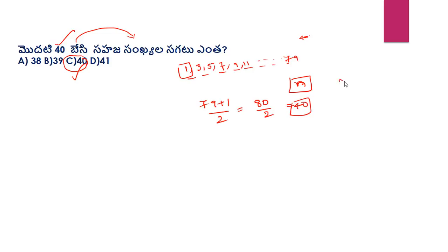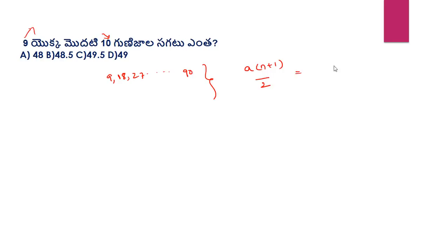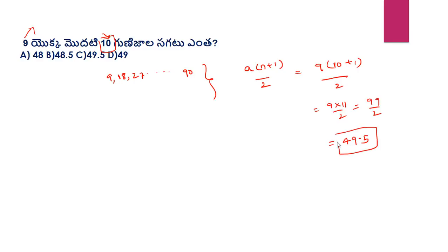Let's start with the formulas n plus 1 and n plus 1. Next question: 10 terms, first term is 90. The formula is a into n plus 1 divided by 2. So 90 into 10 plus 1 divided by 2 equals 90 into 11 divided by 2 equals 990 divided by 2 equals 99.5. The answer is 99.5.